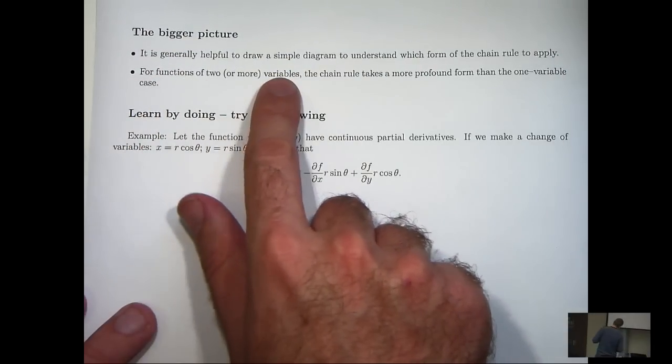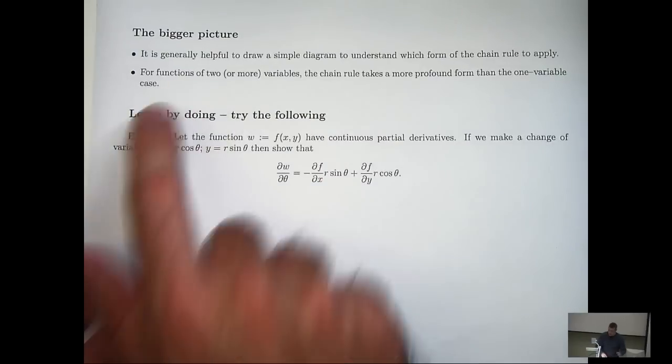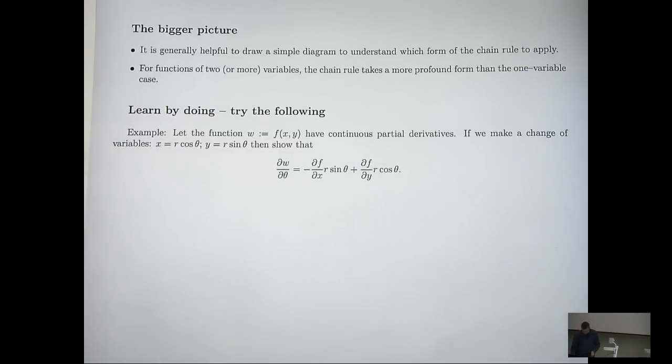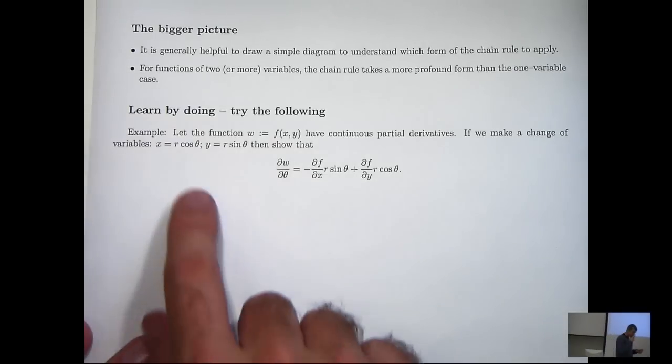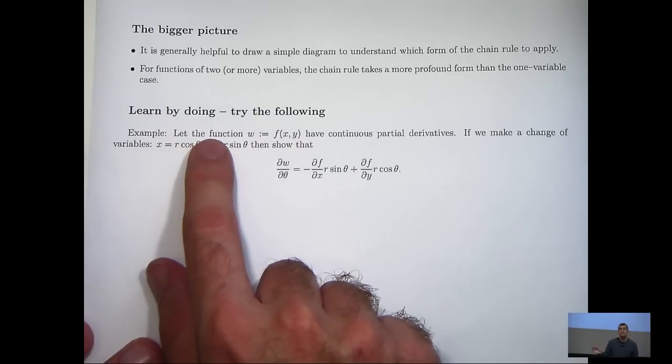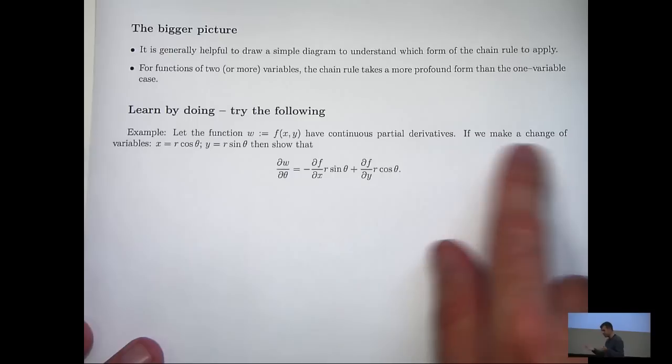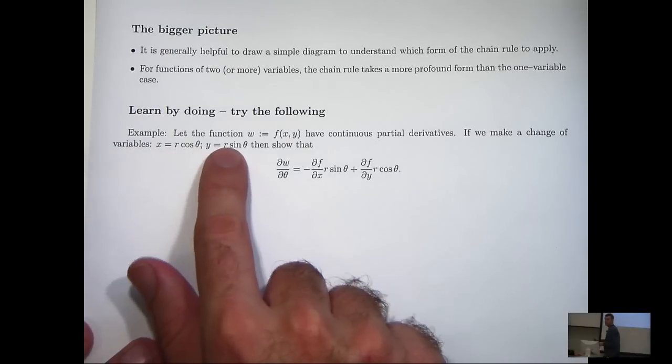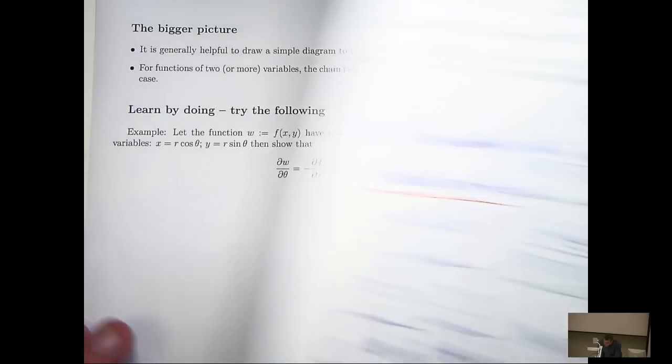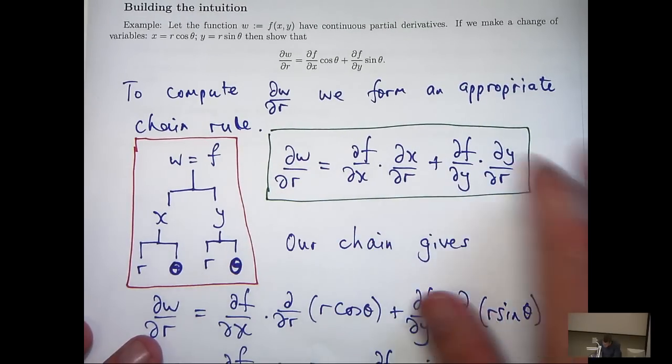So for functions of two or more variables, the chain rule takes a more profound form than the one variable case. There's lots of different forms and they're quite complicated. Now, it's important that you learn maths by doing maths. Don't just sit there and watch this video and don't do any work. I encourage you to do some examples and really master this subject. So I've provided you with an example very similar to the one I just solved. Consider the following function. If we make a change of variable, x equals r cos theta, y equals r sin theta, show that dw d theta satisfies this. Okay, so you have to go through and formulate the chain rule for dw d theta.